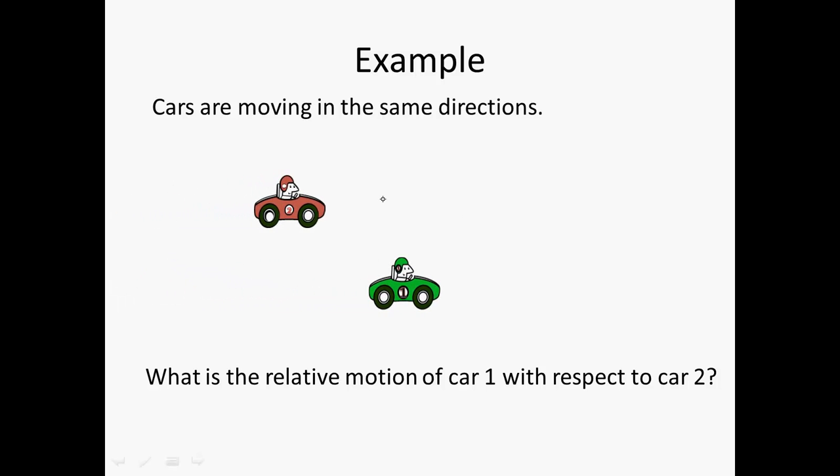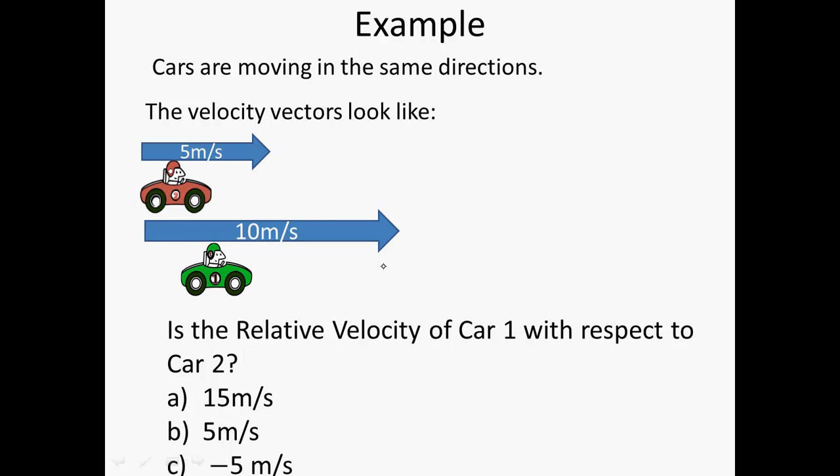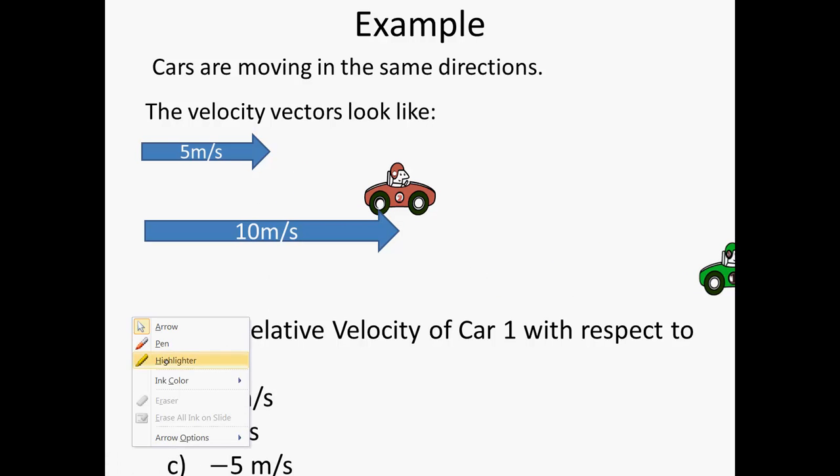Just here's a simple example. If you've got two cars that are moving, the relative motion of one with respect to two is going to be less than those. If you imagine in this case you've got one car going at five meters per second, one going at ten meters per second, the relative motion of one with respect to two, the answer for that would be five meters per second.